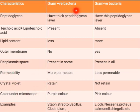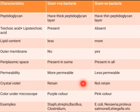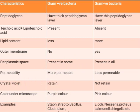Gram positive bacteria retain crystal violet, but gram negative bacteria do not retain crystal violet. This is important because gram staining uses crystal violet as a dye. Gram negative bacteria must be treated with a counterstain called safranin, which they retain, giving them a pink color under the microscope. Gram positive bacteria appear purple under the microscope because they retain crystal violet.